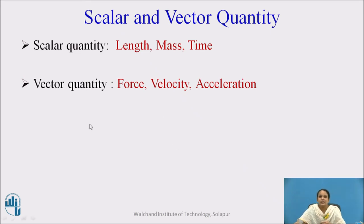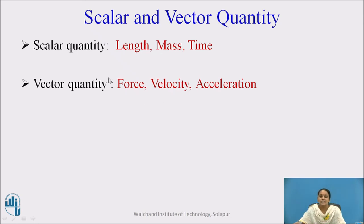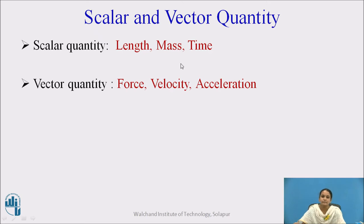Now, scalar and vector quantities. Scalar quantities are those which have only magnitude and no direction. Vector quantities have both magnitude and direction. Examples of scalar quantities: length, mass, and time. Examples of vector quantities: force, velocity, and acceleration.